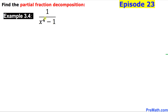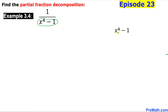Let's go ahead and focus on the denominator over here: x to the power 4 minus 1. As we can see that this binomial can be furthermore factored out. I have copied down this binomial x⁴ minus 1 and let's go ahead and factor it out.